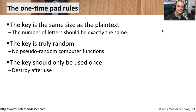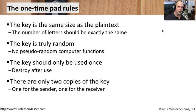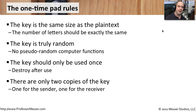Every time you send a message, the key is going to change, making the entire communication very, very difficult to decrypt. Even if you were able to crack the key one time, you would not be able to crack it again because the key is completely different. There should only be two copies of this key — one with the person sending the message and one with the person receiving it. If somebody got a copy of the key somewhere in the middle, they would absolutely be able to decrypt it. Follow these rules and your one-time pad communication won't be seen by anyone else.